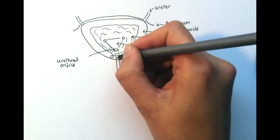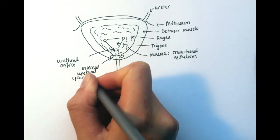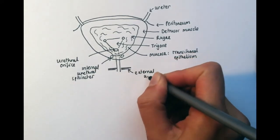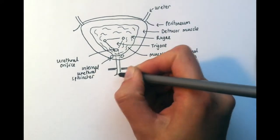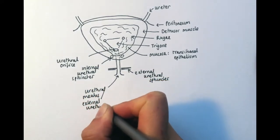As urine exits the bladder, it does so via the urethral orifice into the urethra. This is controlled by the internal urethral sphincter as well as an external urethral sphincter. The end of the urethra is called the urethral meatus or the external urethral orifice.